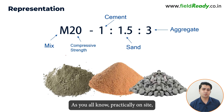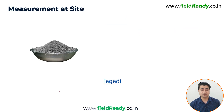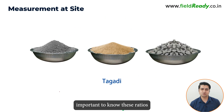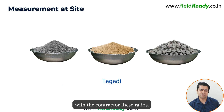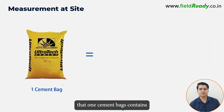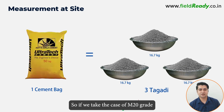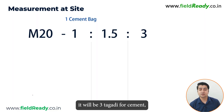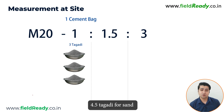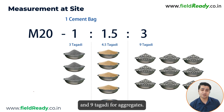As we all know, practically on site, everything is measured in terms of tagadi. So it's important to know these ratios in terms of tagadi, otherwise you won't be able to communicate these ratios with the contractor. It's important to know that 1 cement bag contains 3 tagadi of cement. So for M20 grade in terms of tagadi, it will be 3 tagadi for cement, 4.5 tagadi for sand, and 9 tagadi for aggregates.